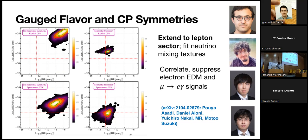If you turn on flavor symmetries but leave generic CP violation, you can do a bit better but you're still badly ruled out by EDMs. If you turn on spontaneous CP violation in a particular way but leave generic flavor violation, you're still badly ruled out by mu-to-e-gamma. But if you correlate them along the Nir-Rattazzi lines, you could have TeV-scale new physics that's safe from all these constraints. This shows that it's important to understand how these symmetries are broken in nature — if they're not fundamental symmetries at all, then these precision experiments are really disfavoring new physics anywhere near the TeV scale.